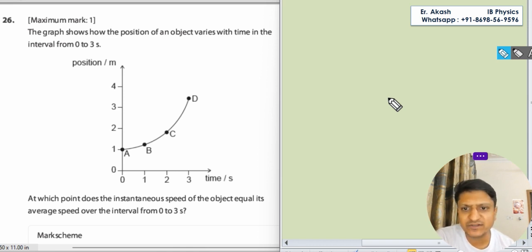Position time graph is given to us and it's a parabolic curve. At which point does the instantaneous speed of the object equal its average speed over the interval from 0 to 3?